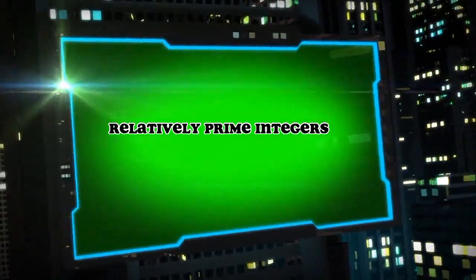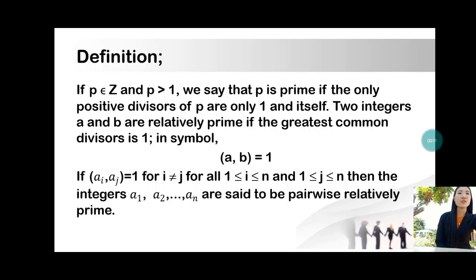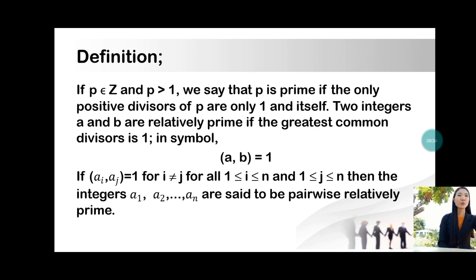Good morning everyone. I am here to present to you about relatively prime integers. Definition: if p is an element of the integers and p is greater than 1, we say that p is a prime if the only positive divisors of p are 1 and itself. Two integers a and b are relatively prime if the greatest common divisor is 1, in symbol: gcd(a, b) = 1.